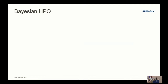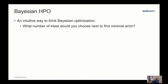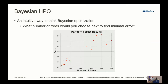Jumping over to Bayesian HPO. I like describing Bayesian optimization with pictures rather than math. The intuitive way to think about it: if you have data of random forest results with different numbers of trees, and you're tasked with choosing the next point to evaluate to find the minimal error—you'd probably choose somewhere that's already doing pretty well. That's exactly what Bayesian optimizers are doing.